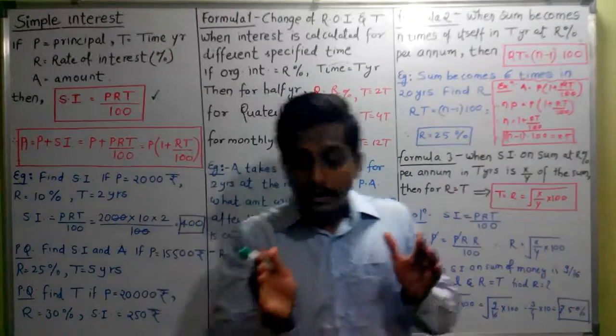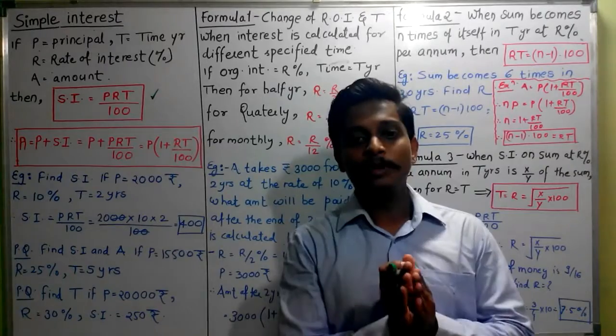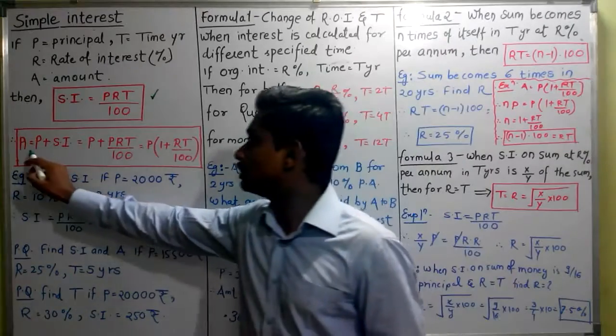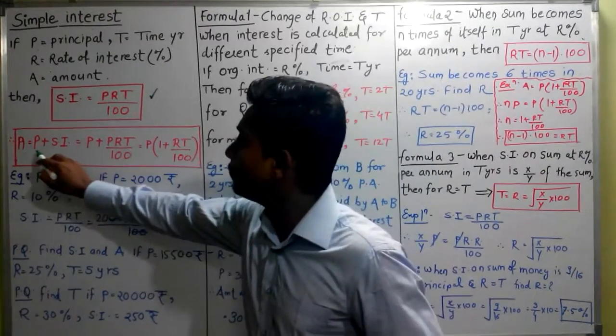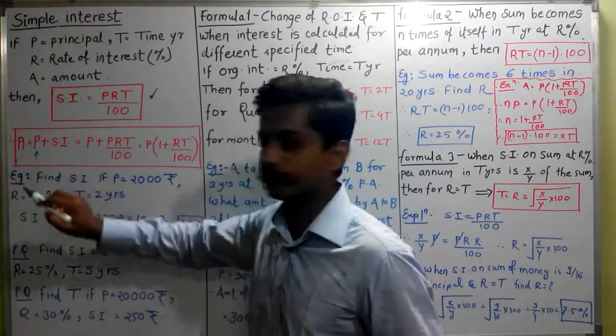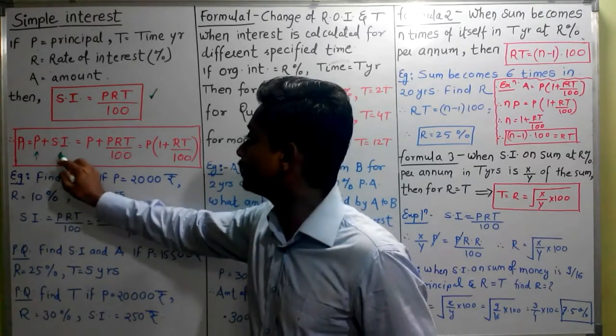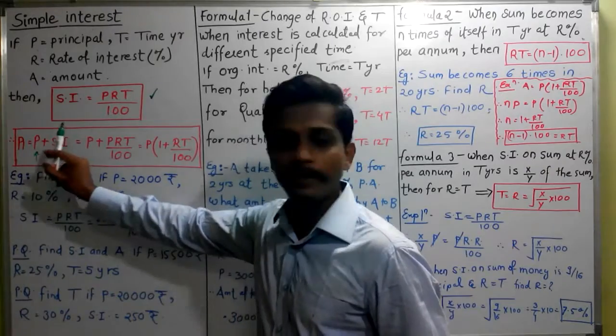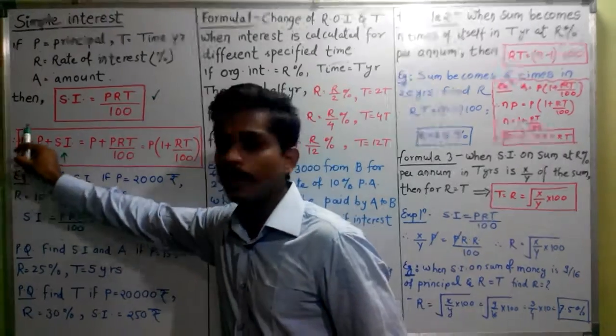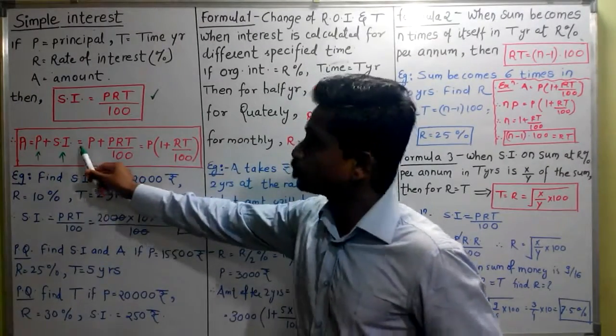Now the total amount that you will get is the final amount. The final amount will be the amount that you have in the bank plus the simple interest you will get. So P plus SI, that will give you the final amount A.